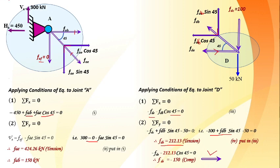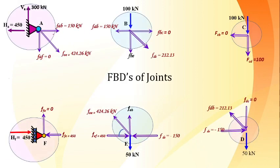FBE = 250 kN compressive — the corrected direction is shown. Since FBE and FEB are equal, opposite, and collinear, FEB = 250 kN compressive as well. With this, all nine member forces have been found and no unknowns remain in the truss.